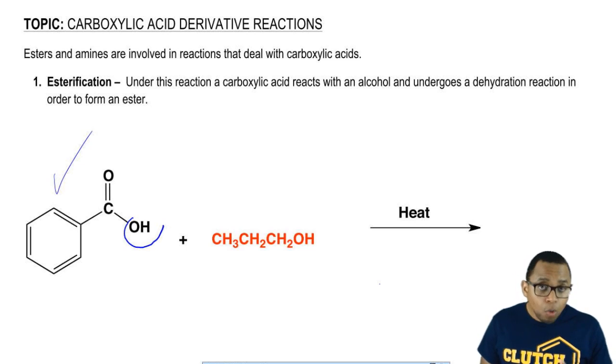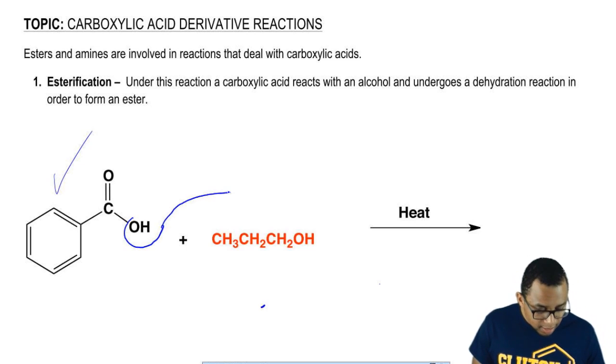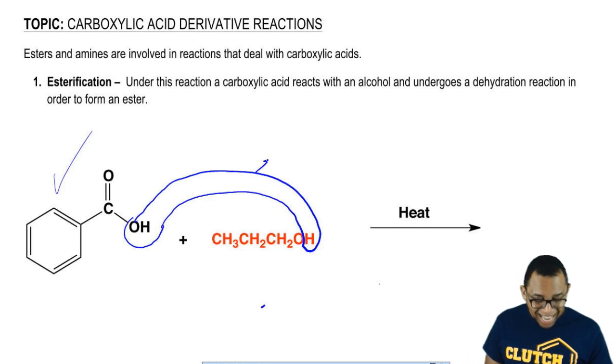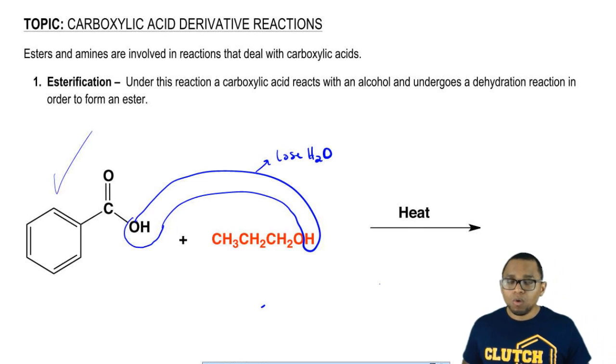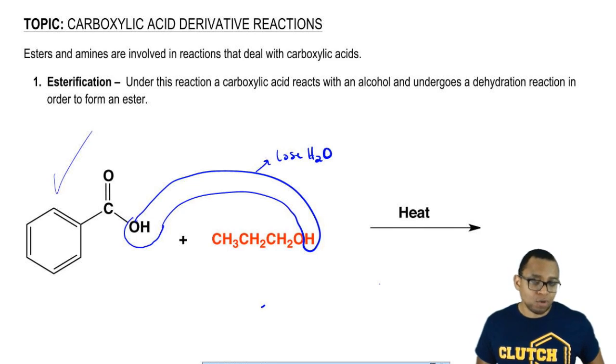The water comes from the OH from the carboxylic acid combining with the H from the alcohol, and it has to be that way. The alcohol does not give up its OH. The alcohol only gives up its hydrogen. It's the carboxylic acid that's giving up its OH.